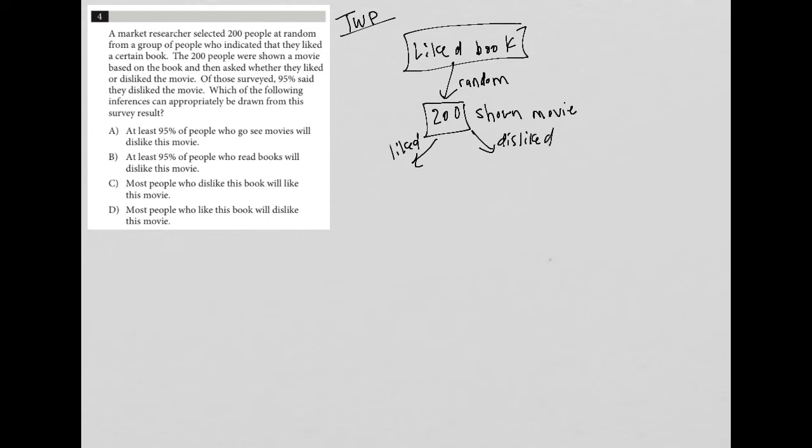The next sentence says of those surveyed, 95% said they disliked the movie. So over here we have 95%. And the next sentence says which of the following inferences can appropriately be drawn from this survey result? Well obviously, if 95% disliked, then I can just fill in that 5% liked over here.